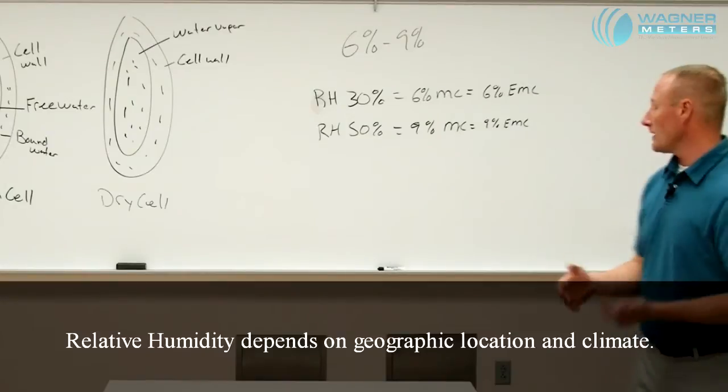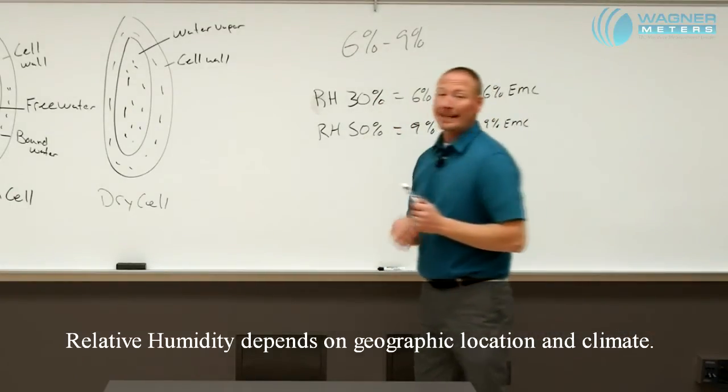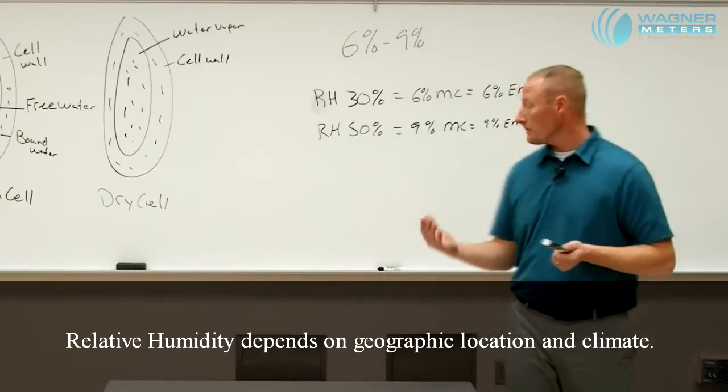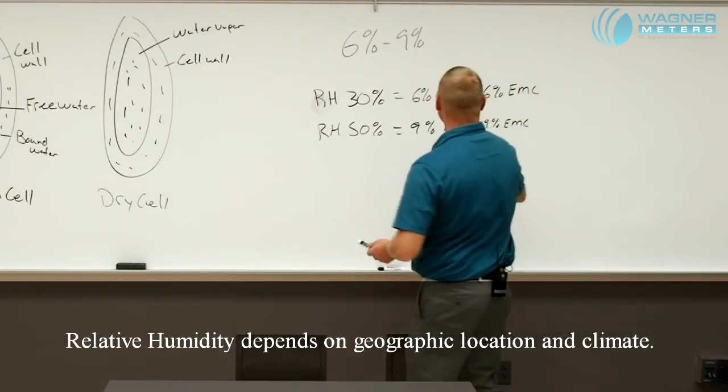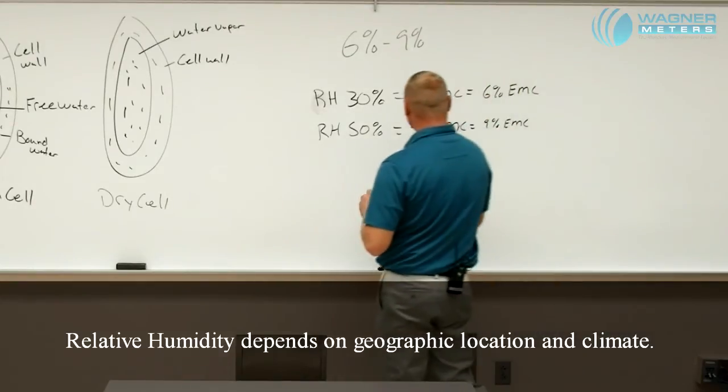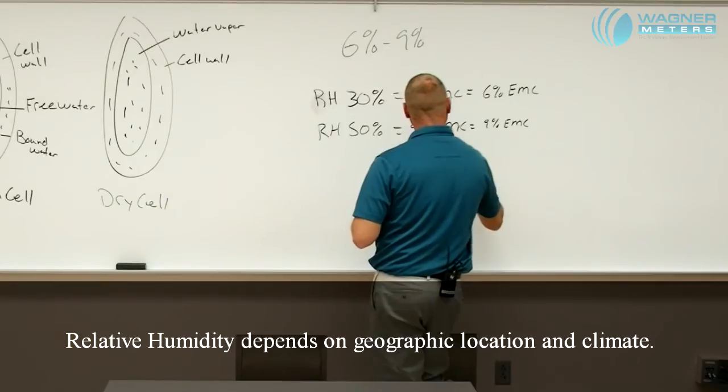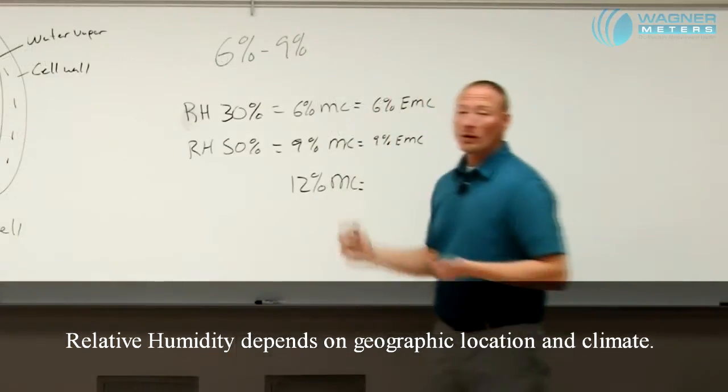For instance, in coastal areas such as Florida, the relative humidity even indoors can be significantly higher than 50 percent, therefore increasing our moisture content higher than nine percent. It's very common in a coastal climate for moisture content to be closer to 12 percent.